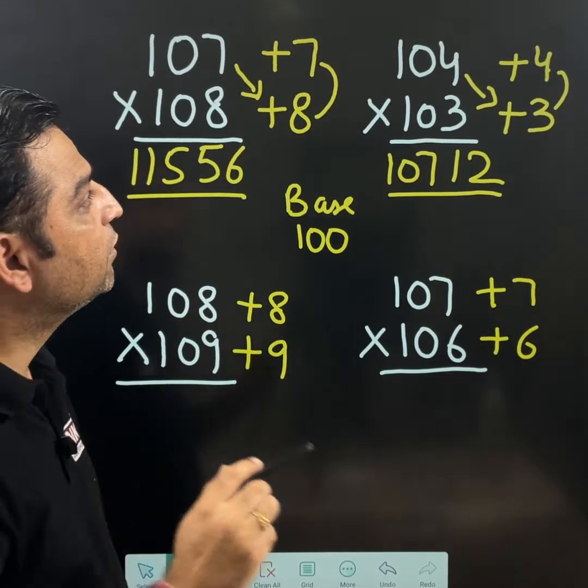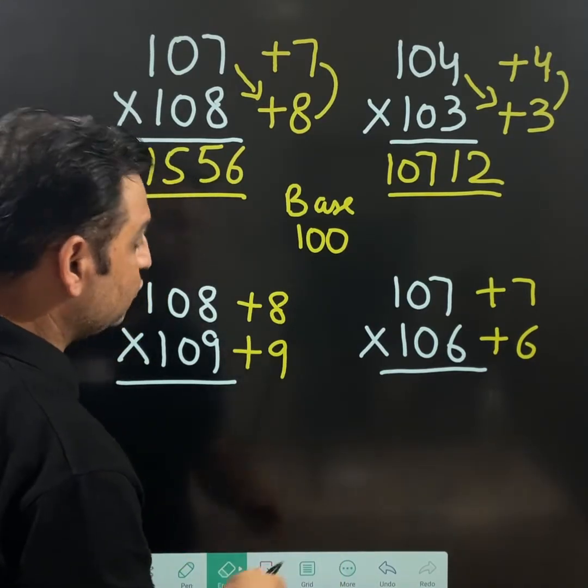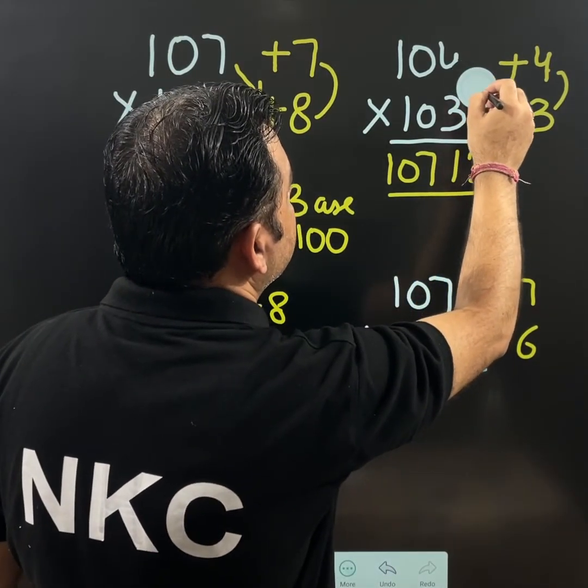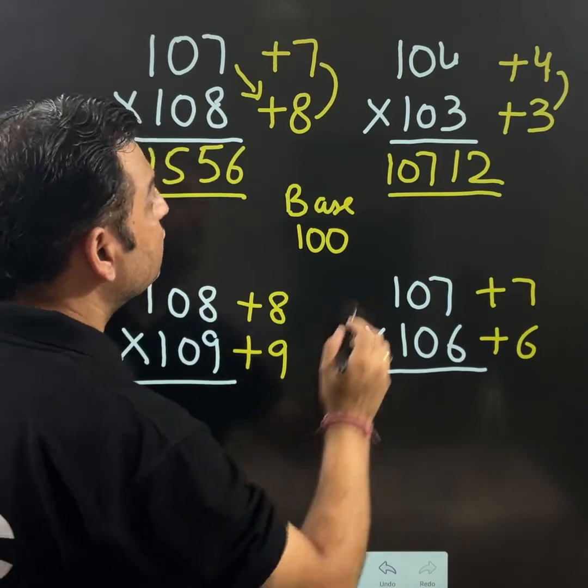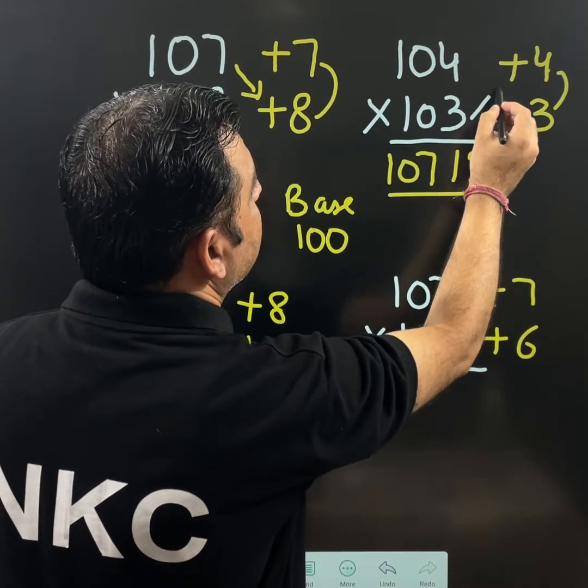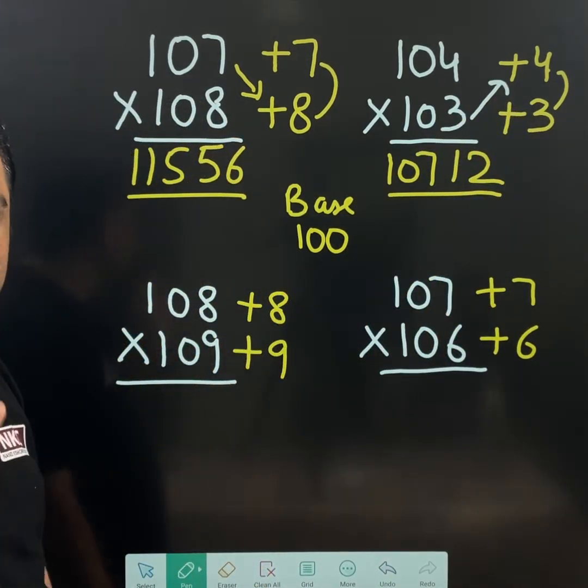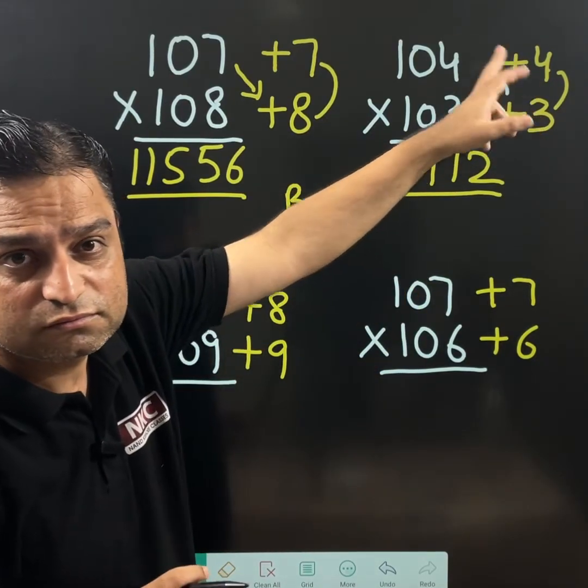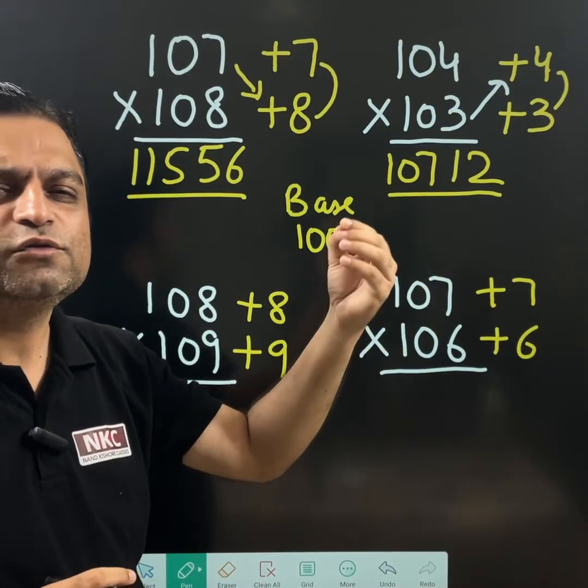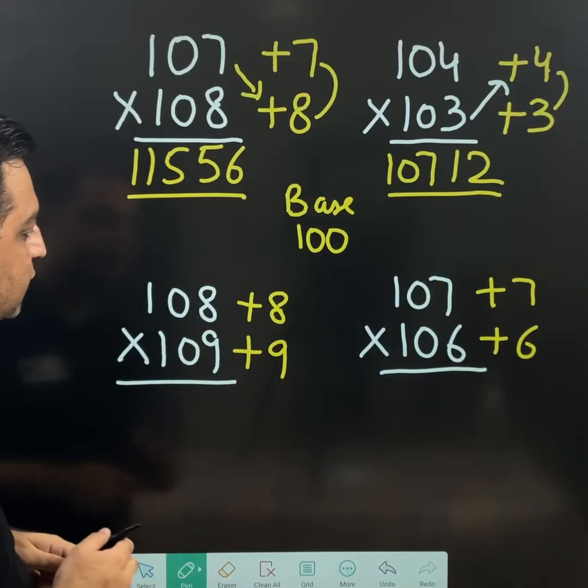But yes, do remember placing arrow downward is not mandatory. This is not mandatory. What you can do, you can place arrow this way also. Same answer you are going to get. 103 plus 4, still 107. So, wherever you feel comfortable, you can place the arrow.